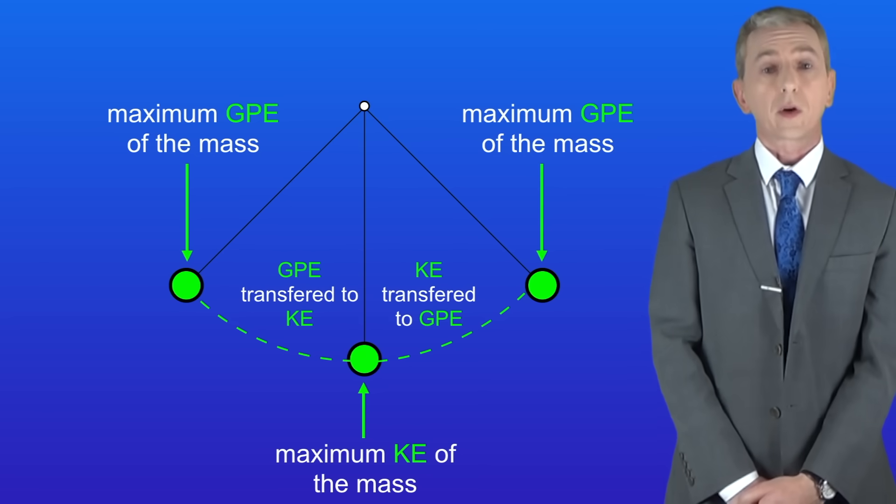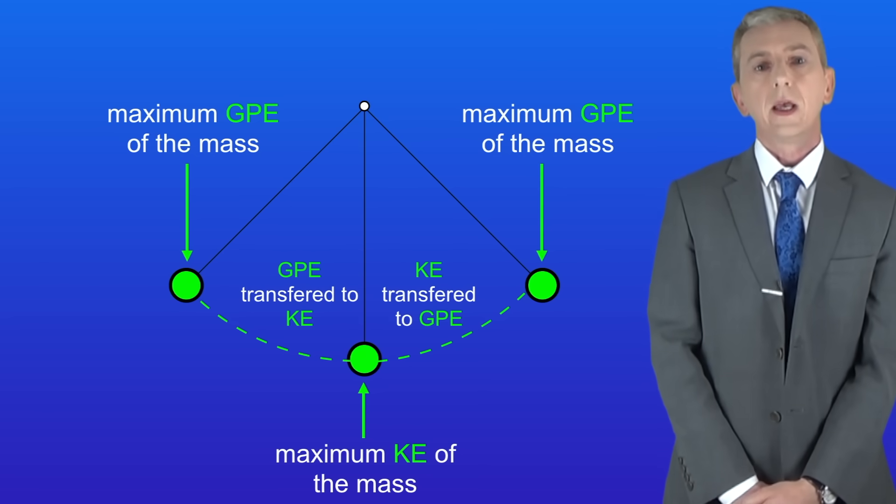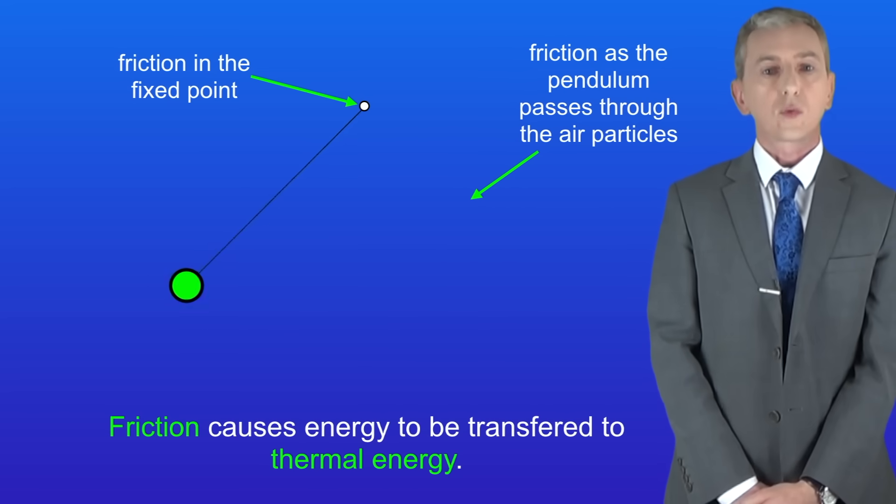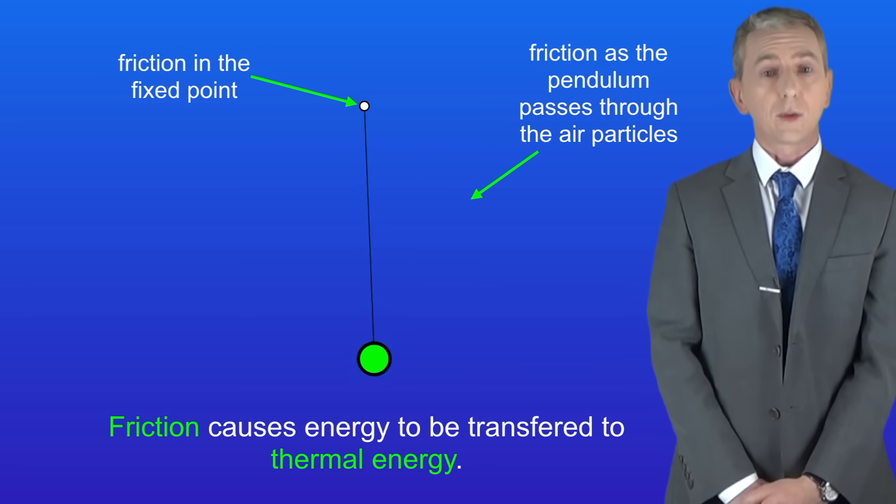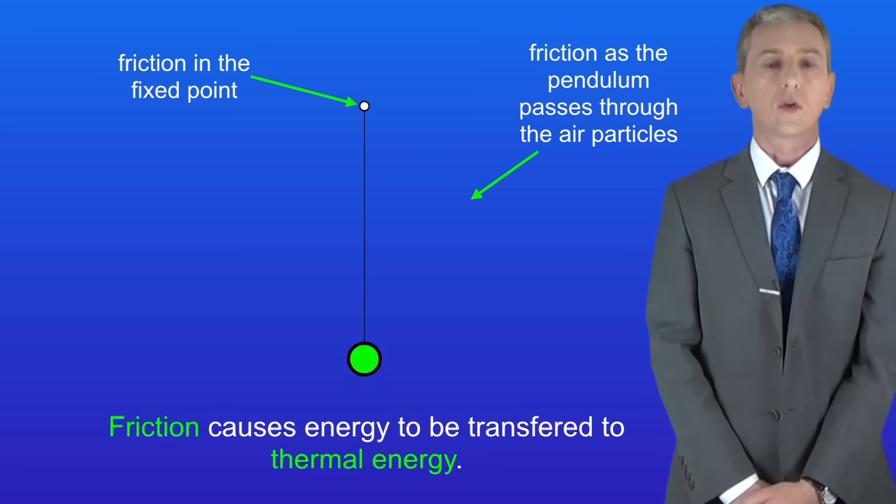Now there is a problem with this model of energy transfer in the pendulum and that is that we've not considered friction. As the pendulum swings there's friction in the fixed point. There's also friction as the pendulum passes through the air particles. Now friction causes energy to be transferred to thermal energy stores.